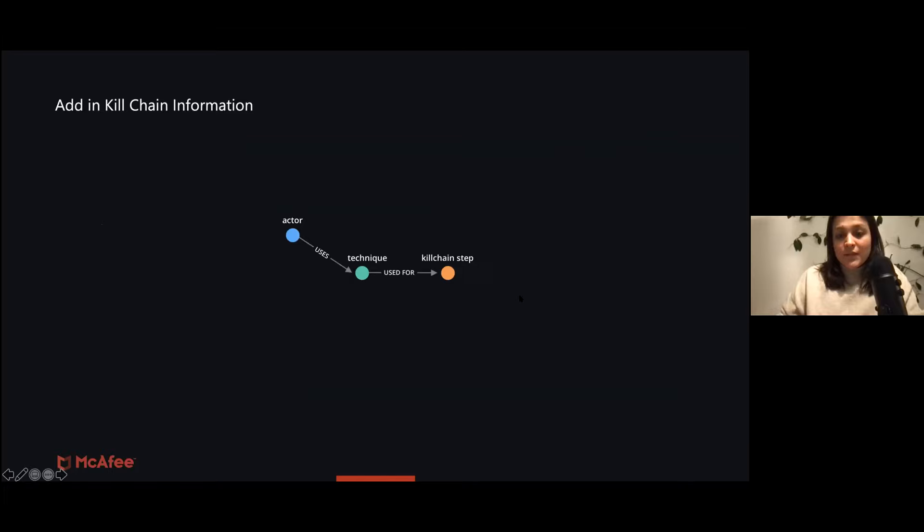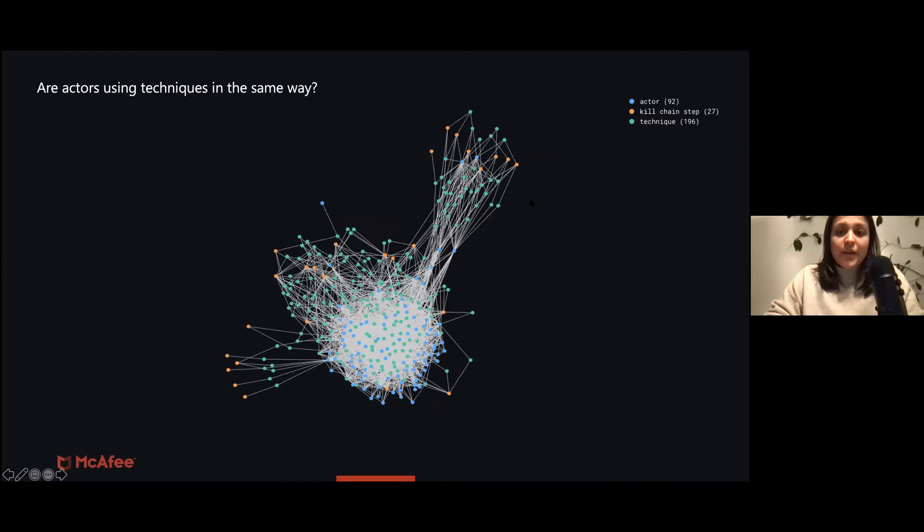Based on our data, we have one more question to answer, which is, are actors using techniques in the same way? So we look at the actor-centric graph, but it's still quite a dense cluster. In this case, we wanted to introduce more information to maybe be able to differentiate actors in a smarter way. So what we did is introduce kill chain information. So a technique that belongs to a specific kill chain step. This is the new representation proposed. Actor uses technique, and technique is used for this specific step. And this is the resulting graph. The problem is that it's still quite a dense graph. The only thing that we have that is kind of isolated from the rest is on the top right. And this is actually the mobile text. So that's why it's isolated from the rest.